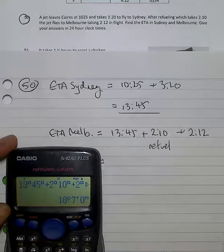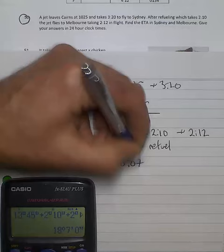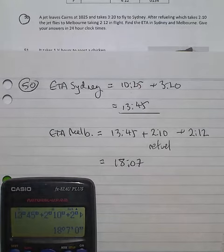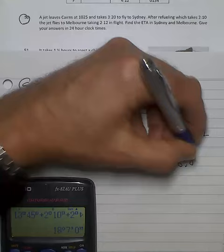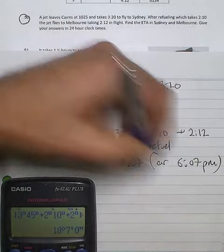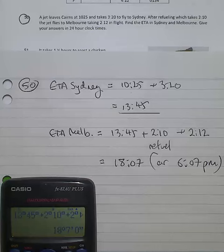We end up with 1807 as the arrival time. Whilst the question doesn't ask you to do that, we could say that's 6:07 p.m. And please make sure that you build some proficiency with the 24-hour times.